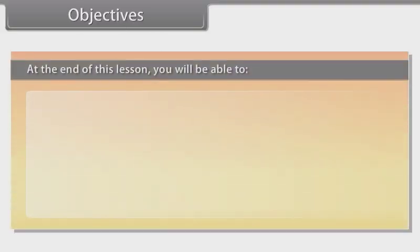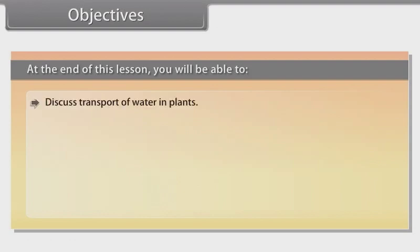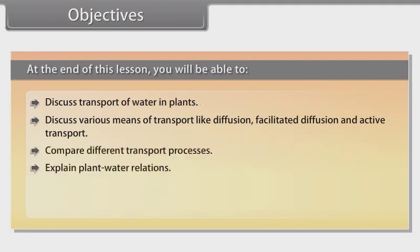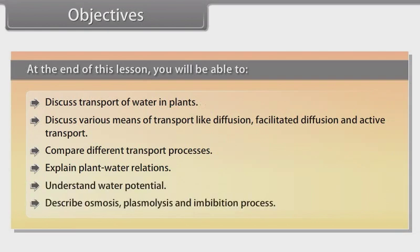At the end of this lesson you will be able to discuss transport of water in plants, discuss various means of transport like diffusion, facilitated diffusion and active transport, compare different transport processes, explain plant water relations, understand water potential, and describe osmosis, plasmolysis and imbibition process.